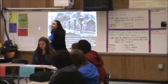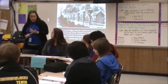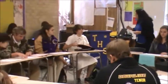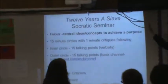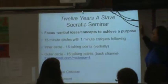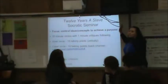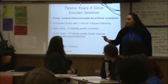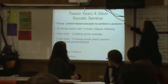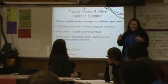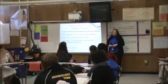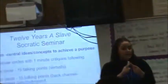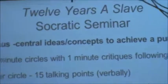Please go ahead and take out your questions, your double journal entry, and your notes from the beginning of the week. Our focus — we've been working on this all week — is making sure we're staying on topic, focusing on those central ideas and concepts presented by Northup to tell his story, and connecting that to the actual purpose of the book. Quick review: we will have 15-minute circles with one-minute critiques; you've already been assigned your partners.